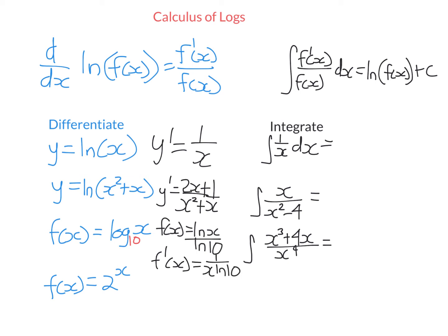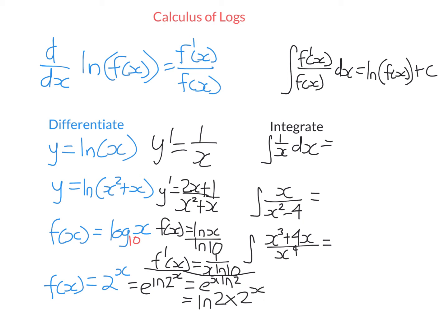We can also use logs to differentiate something like f(x) equals 2 to the power of x. We write 2 to the x as e to the power of x·ln2, using the fact that e^(ln(2^x)) equals 2^x and moving x to the front using the log law. Differentiating e to the power of something, we multiply by the derivative of the power — the derivative of x·ln2 is just ln2 — and leave the rest. Since e to the x·ln2 is just 2 to the x, the derivative of 2^x is ln2 times 2^x. Similarly, the derivative of 4^x is ln4 times 4^x.